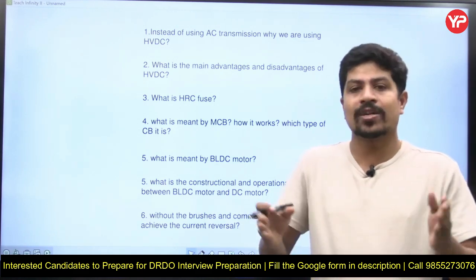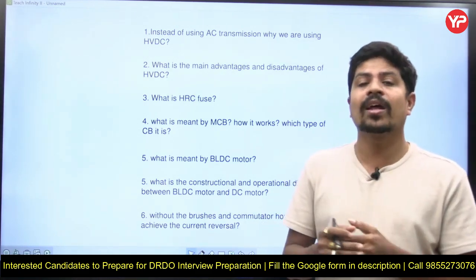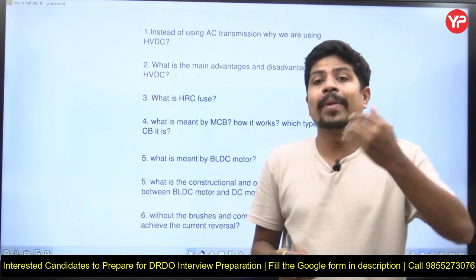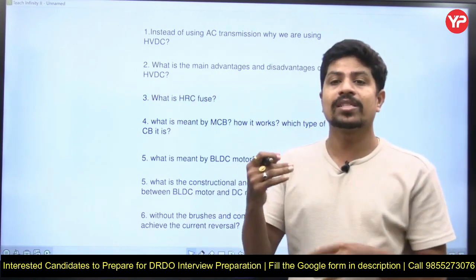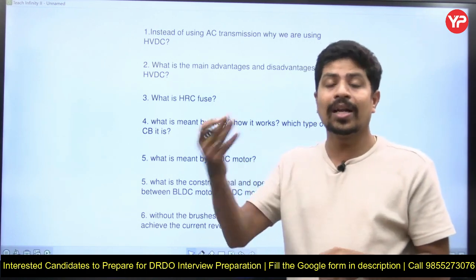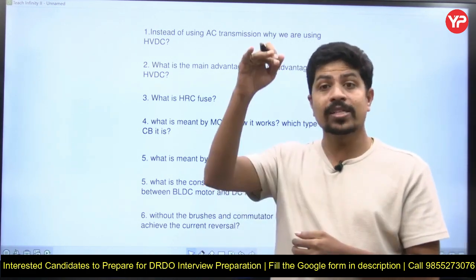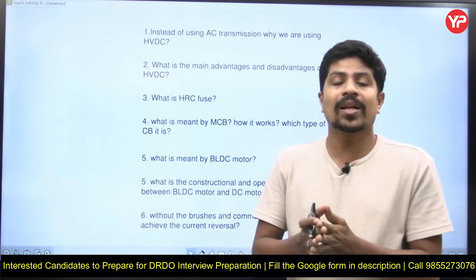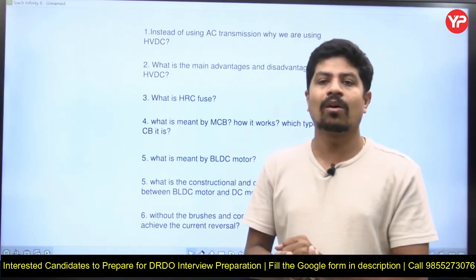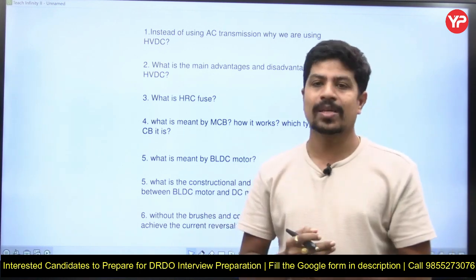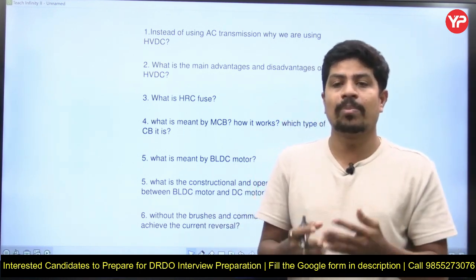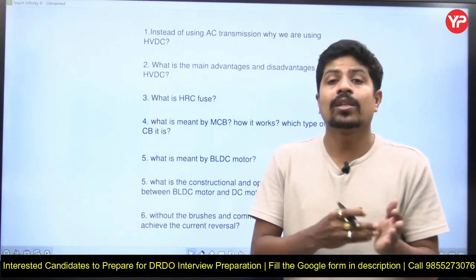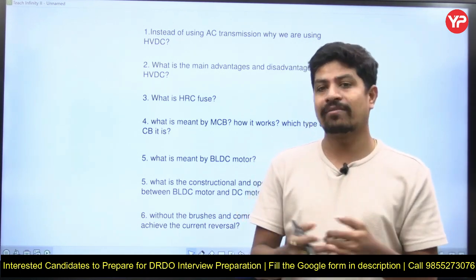The main reason to go for HVDC is power system stability. With AC power transmission, as the length of the transmission increases, the reactance increases and maximum power transfer capability decreases. Therefore, the load angle delta must increase to send the same amount of power, decreasing stability. There is a relationship between load angle delta and stability — delta should be less than 90 degrees for the system to be stable. The main reason for choosing HVDC over HVAC is to have very good power system stability.